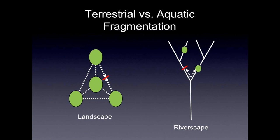So Dave, along with Dan Keeler and I, we invented one, which we call the Dendritic Connectivity Index, or the DCI for short. The DCI is quite simple — it basically measures the probability that an individual fish can move freely between two points in the river network. It's scale independent and a relatively simple formula with really only two parameters.